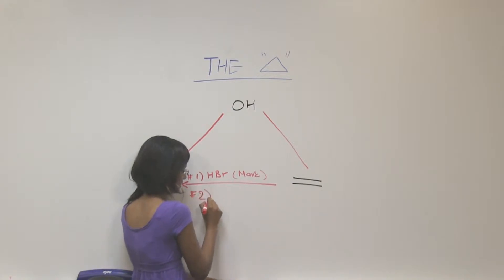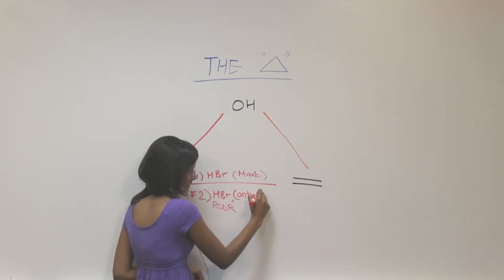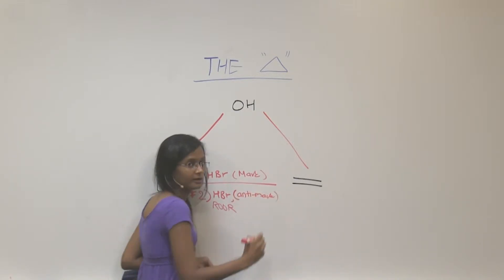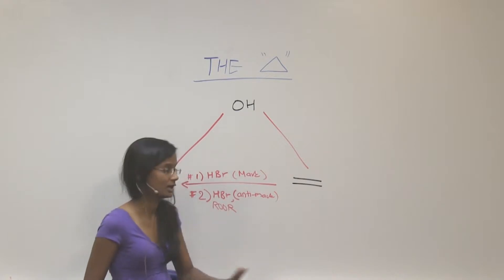Second way is HBr with peroxide. So that will be anti-Markovnikov side. Alright, so these are the two ways you know how to go from alkene to bromine.